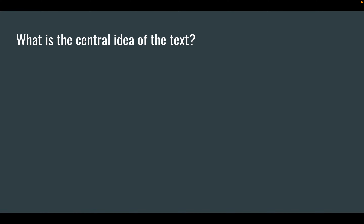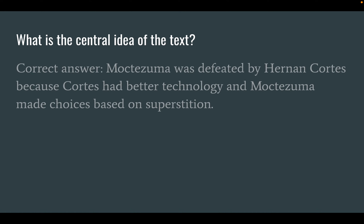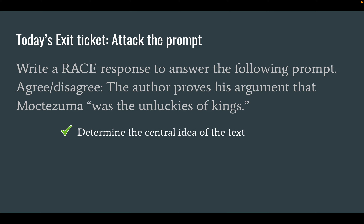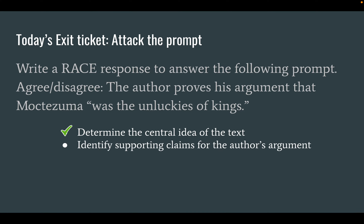This is the end of the text. Take a quick moment, jot your central idea to yourself, then answer the questions on the EdPuzzle. Here's the correct answer — my version of the central idea: Moctezuma was defeated by Hernán Cortés because Cortés had better technology, and Moctezuma made choices based on superstition. So far, we have determined the central idea. We still have more steps to fully answer the question.